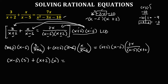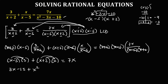Since we can cancel x plus 2 and x plus 2, and x minus 5 and x minus 5, the remaining is 7x. Then distributing: x times 3 is 3x, and negative 5 times 3 is negative 15. Then for the next term: x times x is x squared, and 2 times x is positive 2x. So we have 3x minus 15 plus x squared plus 2x equals 7x.